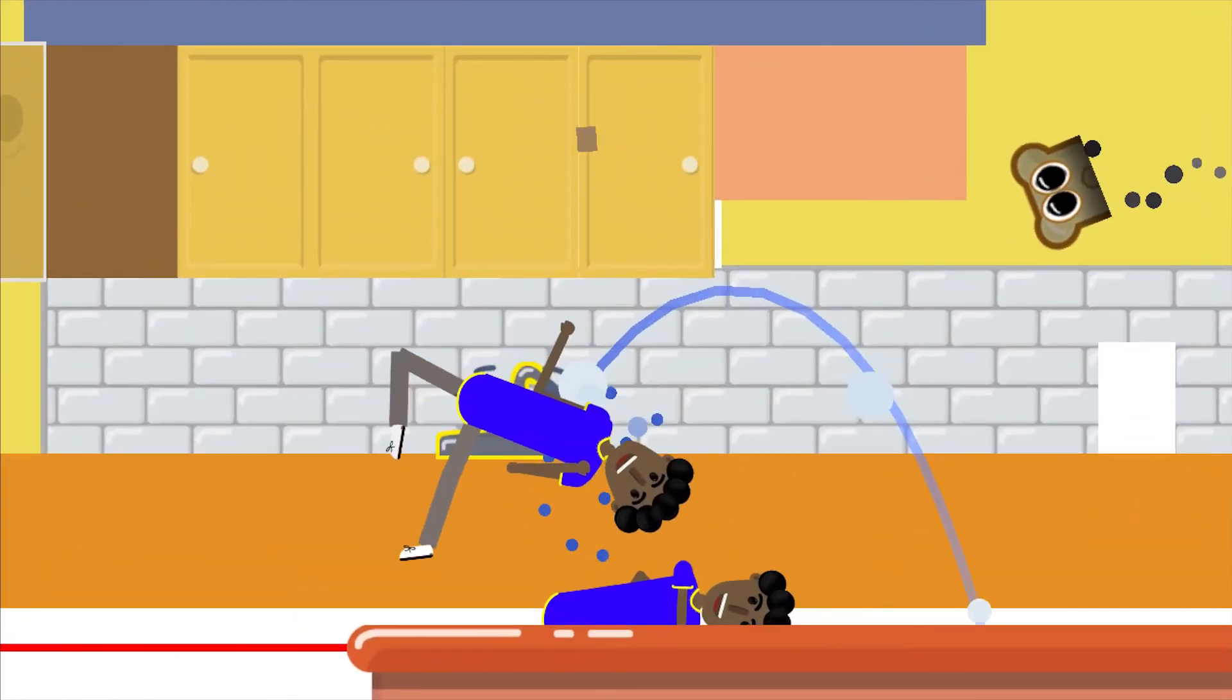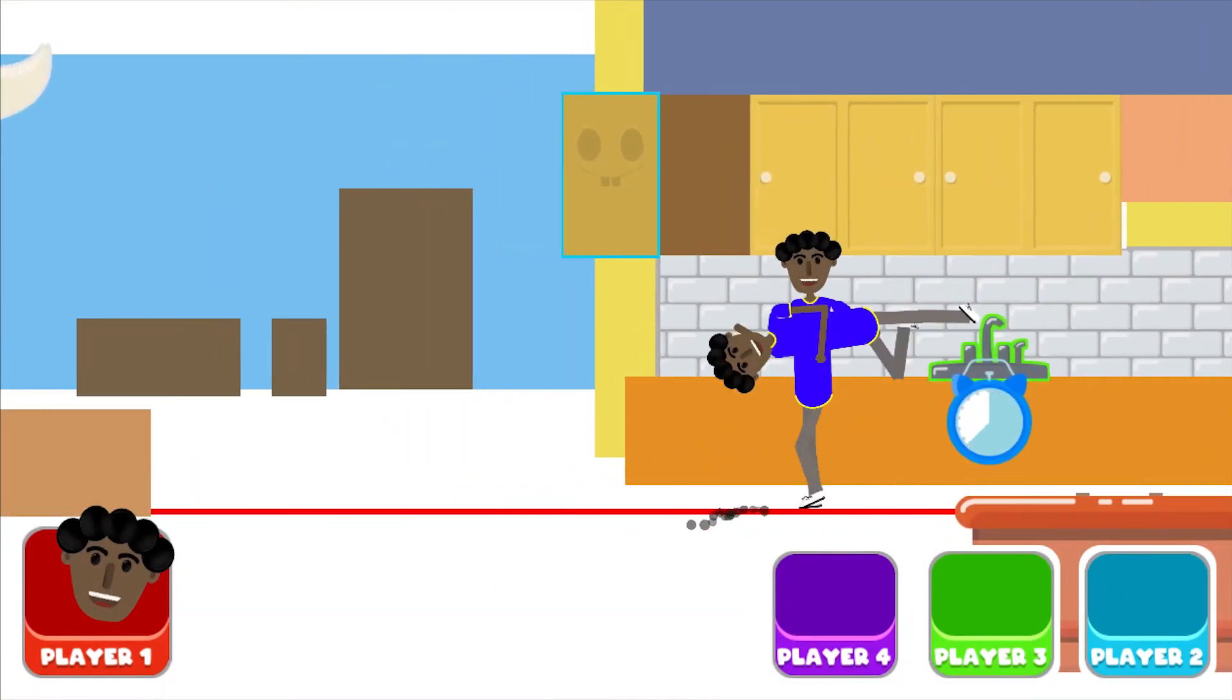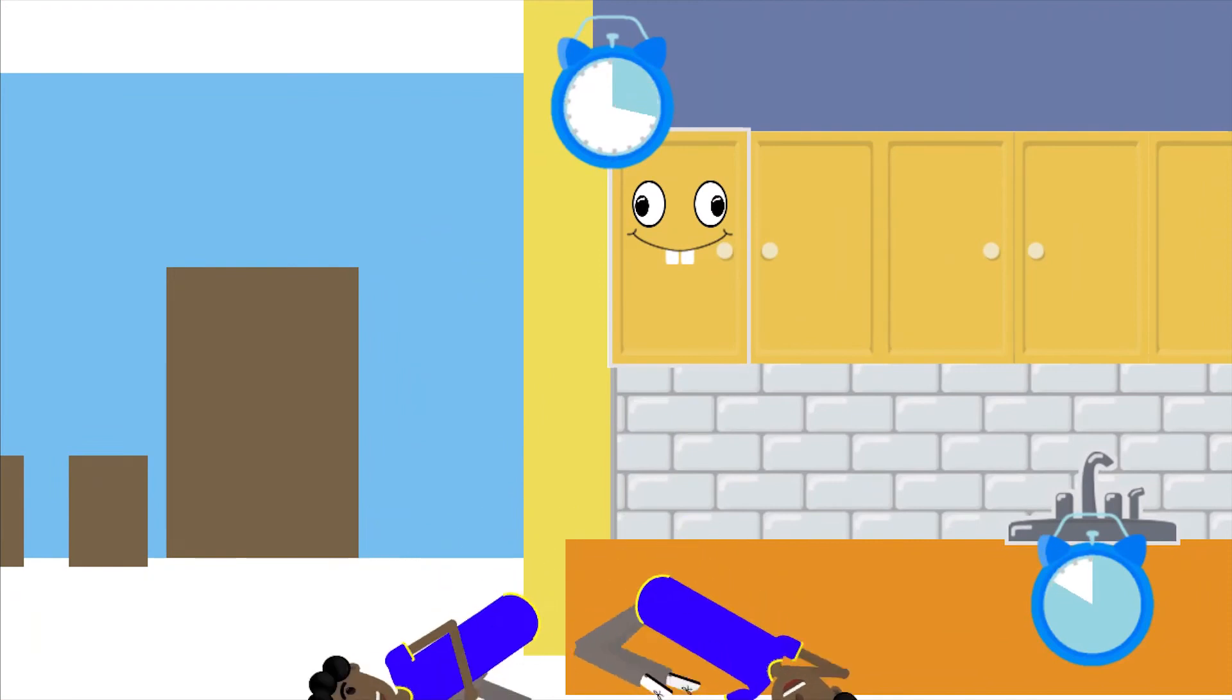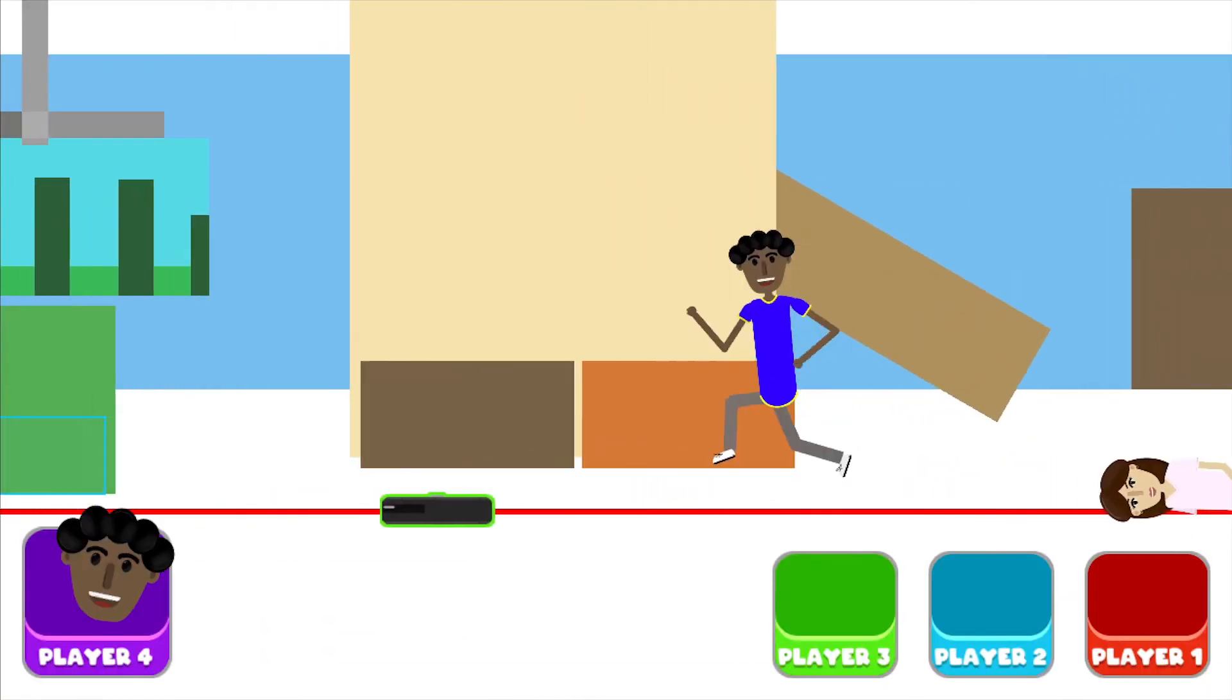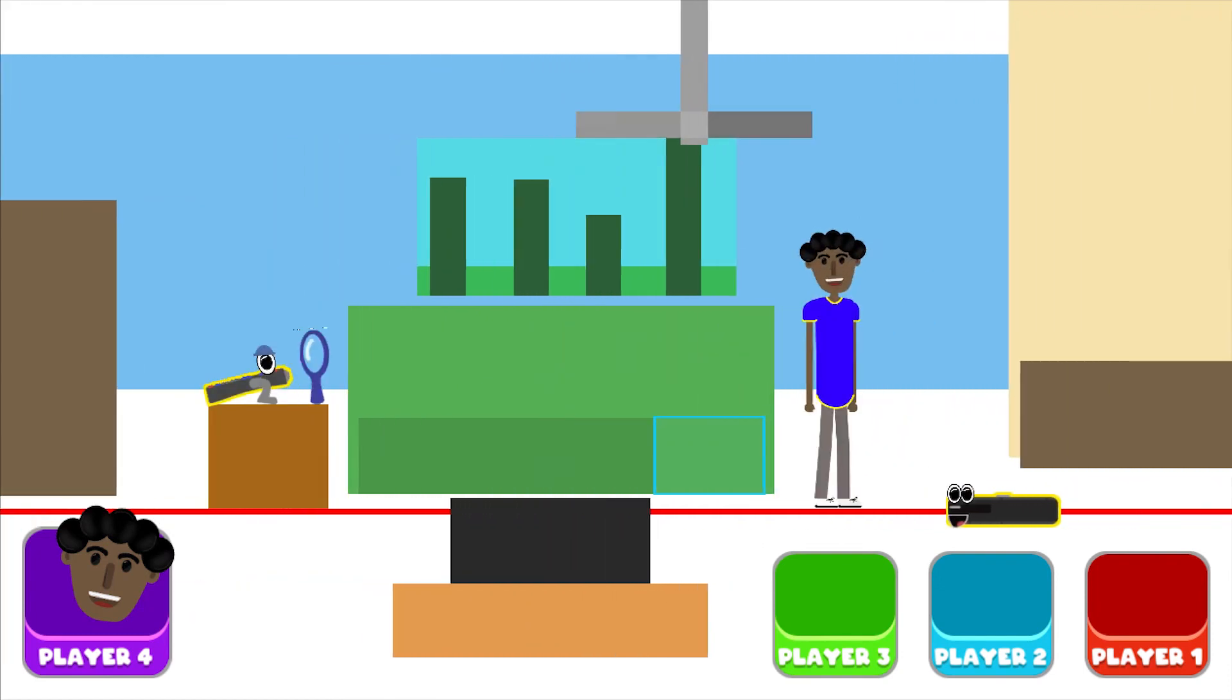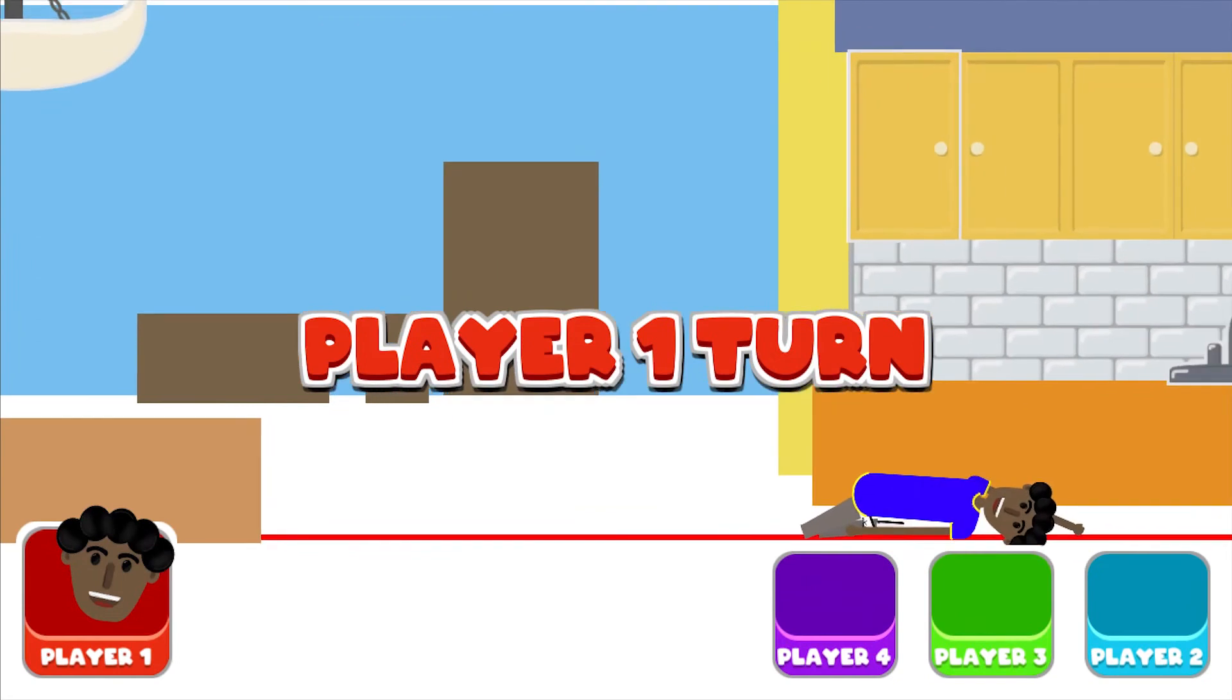So going through, you have the toast flying in, then the sink kind of in the background, and then the cabinet which swings open. Then in the middle you have the swinging light. Then in the living room you're going to have the remote laser, the couch that flips up (that still needs art), and then the vacuum cleaner on the ground.